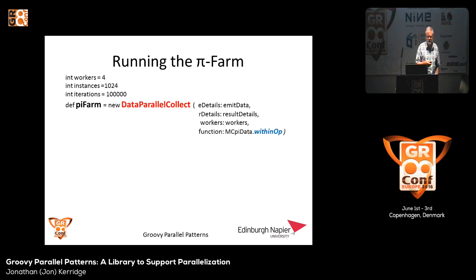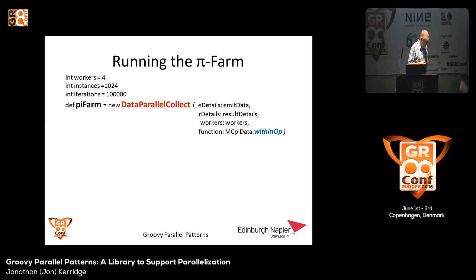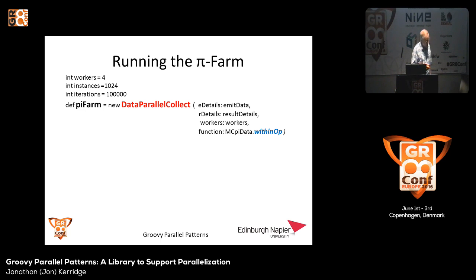Let's run a pi farm. I'm going to have four workers, generate 1024 object instances, and each of those instances is going to generate 10,000 iterations. To define the farm, I call a pattern called data parallel collect. I pass it some information about how I'm going to emit data into the system and how I'm going to collect the results. I tell it how many workers I want, and I tell it to carry out the 'within' operation on the data I'm going to send it. To run it, you do that — that's it. That's your first parallel program.